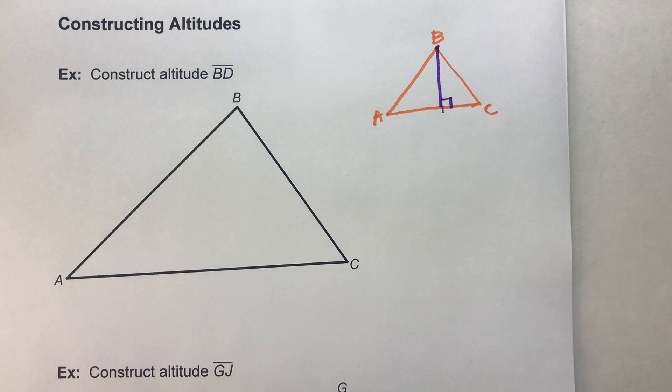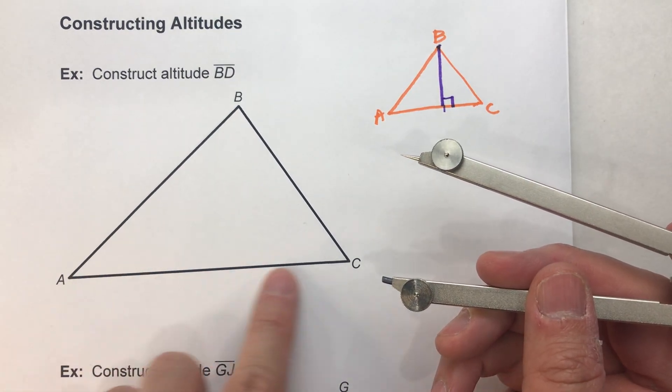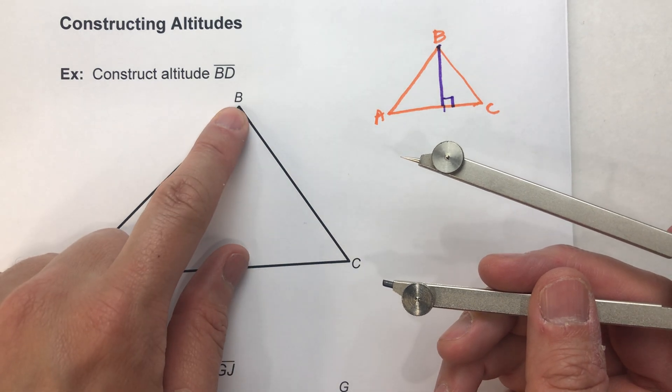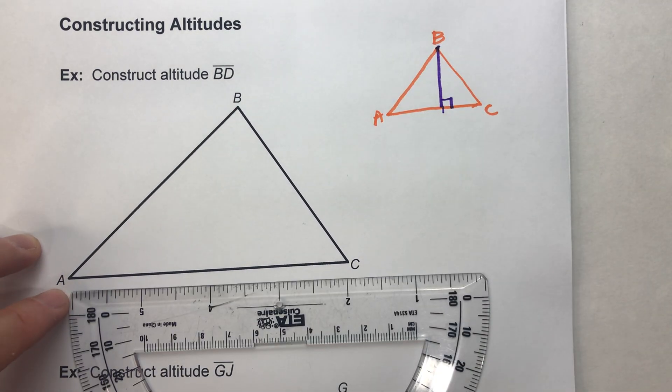Now in order to construct that, we are going to basically construct the perpendicular to this through this point.